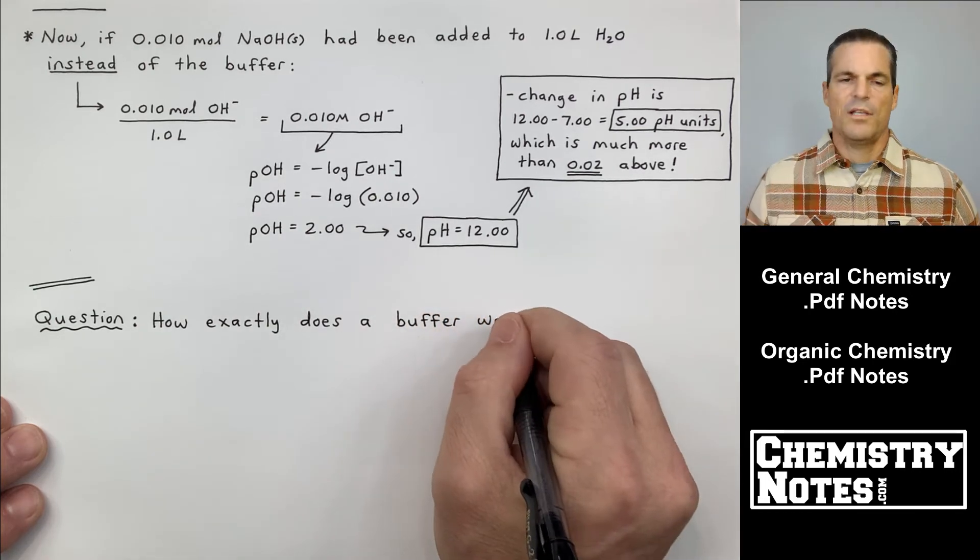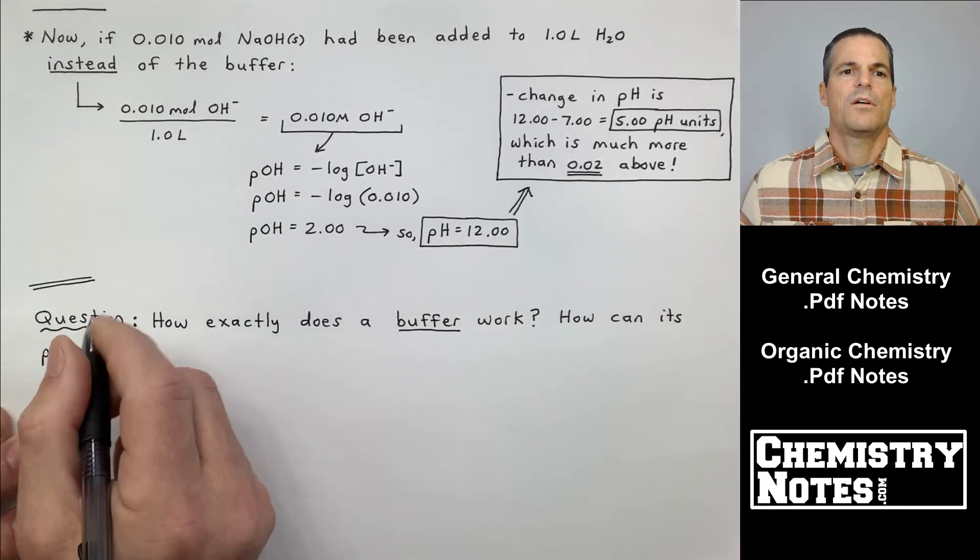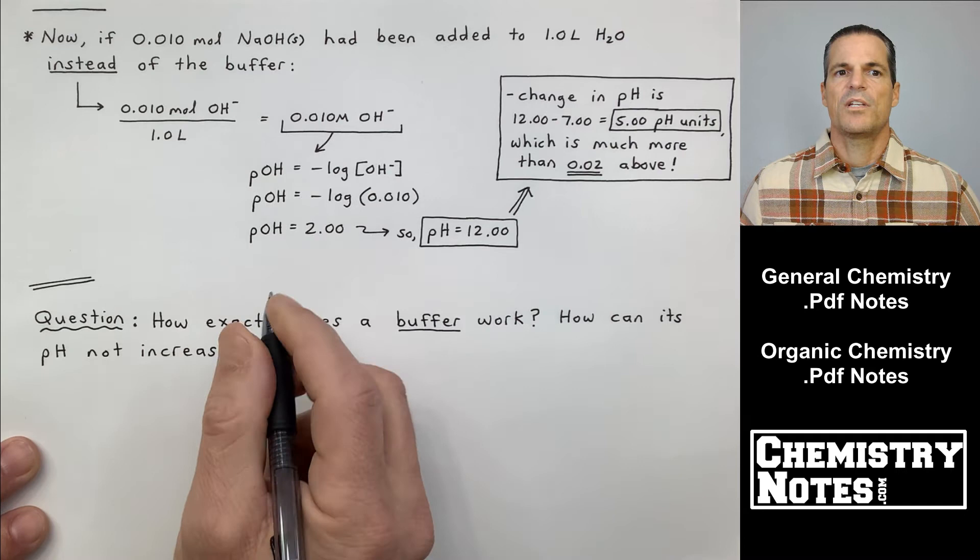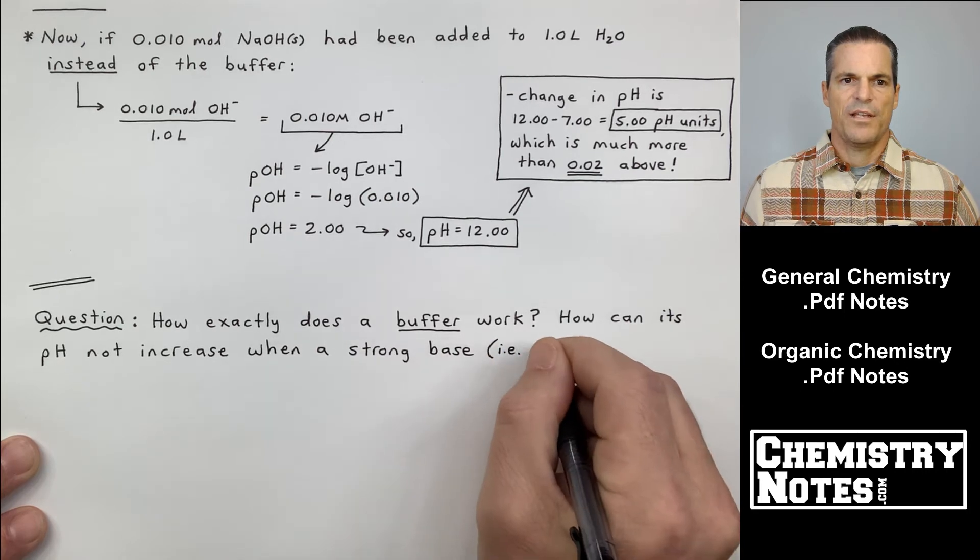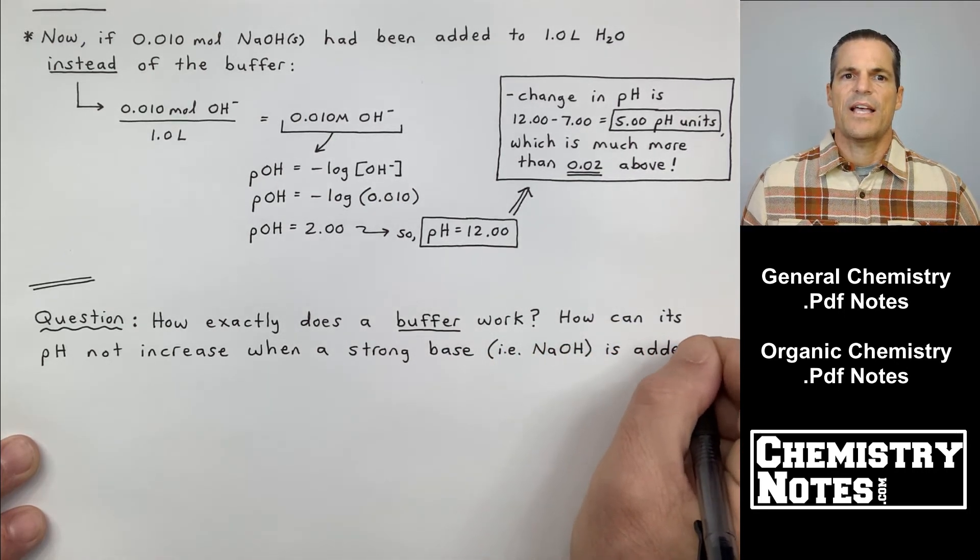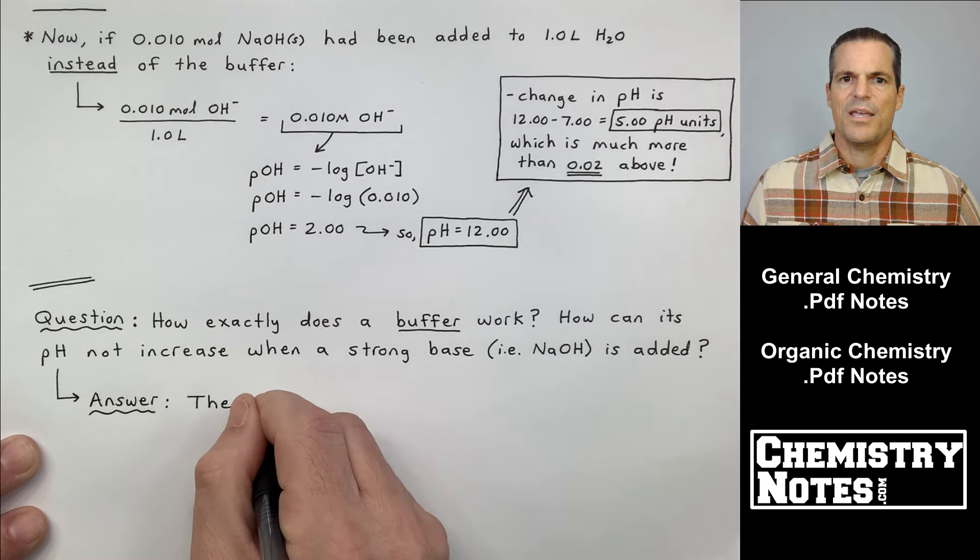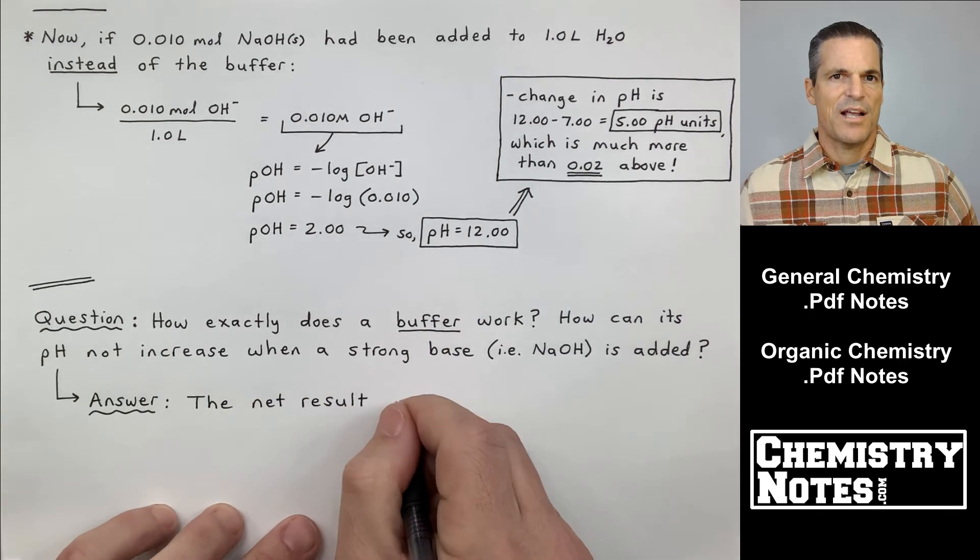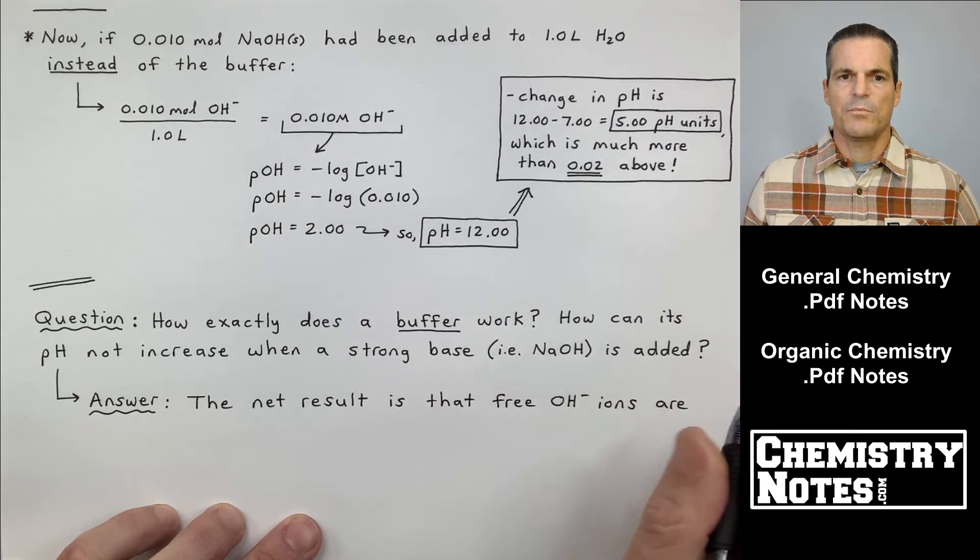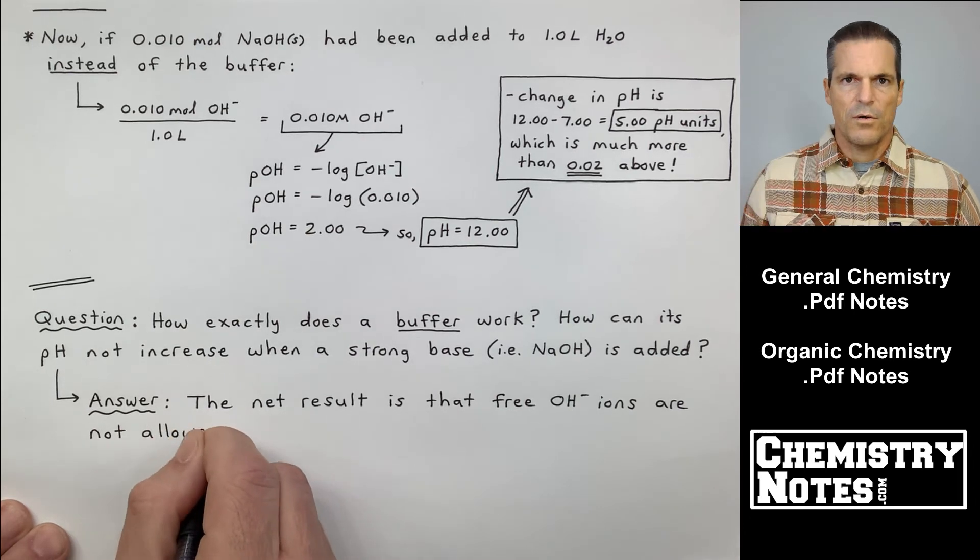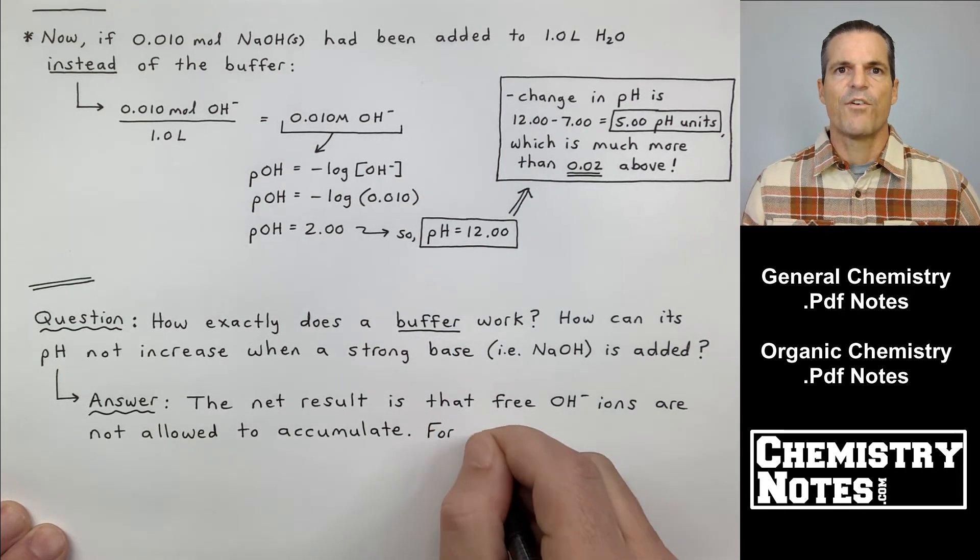All right. Question with a little squiggly underneath it, which means I'm going to have an answer with a squiggly underneath it after I pose the question. So let's let this question build up here. The question says, and I should have enough room underneath this to write the answer. If not, I'll write the answer on the next page of notes. But the question is, how exactly does a buffer work? How can its pH not increase when a strong base, NaOH, is added? Well, I've kind of said it out loud. The OH- that gets introduced. I could have also introduced H+, right? Strong acid, and we'll do that in the next video. But if I introduce OH-, it's not around. It gets quenched. It gets converted into H2O.